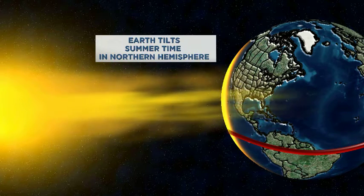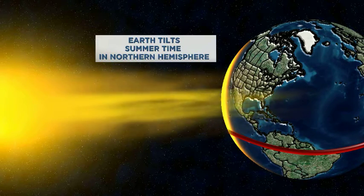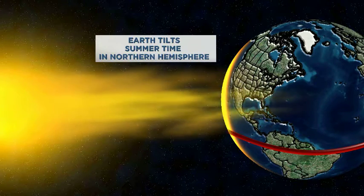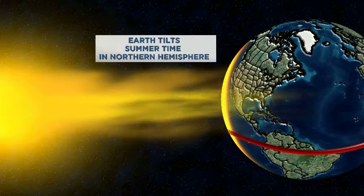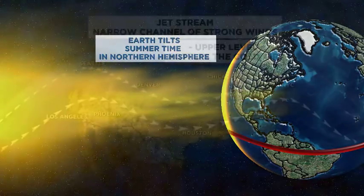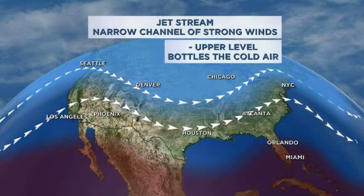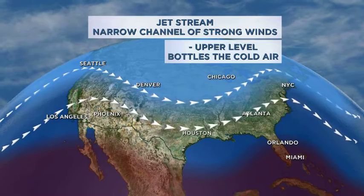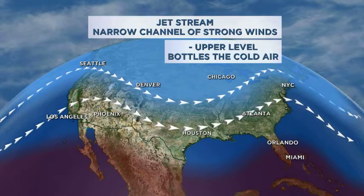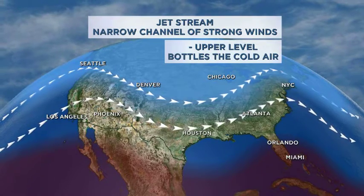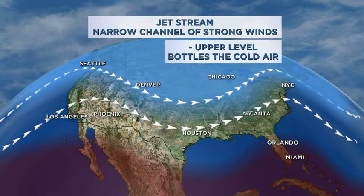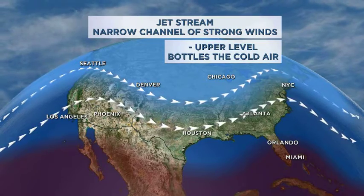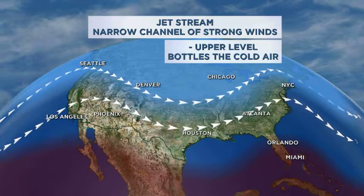It's this tilt that causes all the different seasons on our planet, and with different seasons comes different weather. Let's talk about the jet stream for a minute. The jet stream consists of those narrow channels of very strong winds in the upper levels of the atmosphere, traveling above 250 miles per hour.